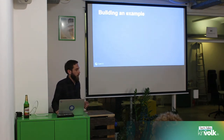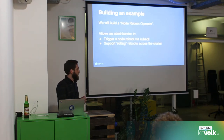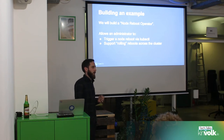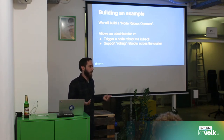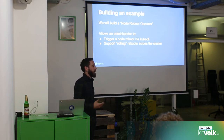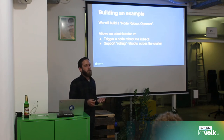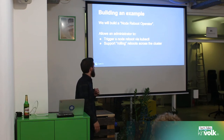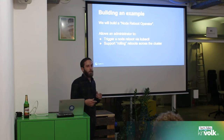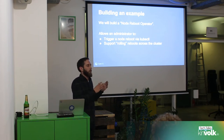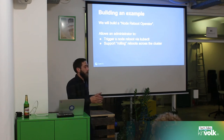I want to talk about building an example. Using existing libraries, it's actually pretty easy to build operators and follow these patterns. As an example, we're going to build a node reboot operator. It's a simple example of how you can build a system that acts on Kubernetes objects, runs inside the cluster, and makes changes to it without adding any code to Kubernetes itself. It'll allow you to trigger a node reboot via kubectl — annotate a node and it triggers a reboot — and it'll support managing rolling reboots across the cluster, so you can say every node needs to reboot without caring about safety or ordering.